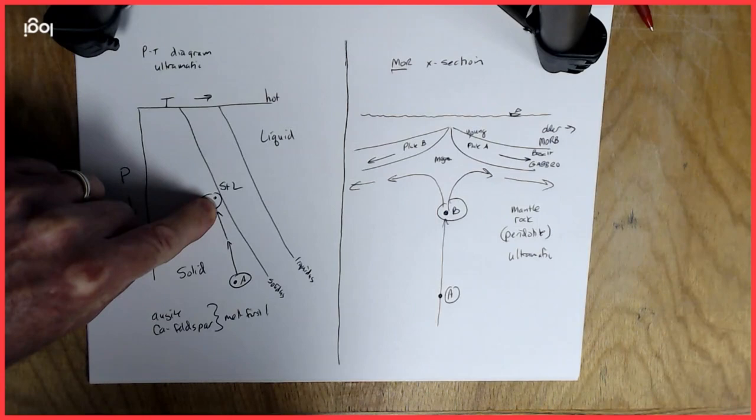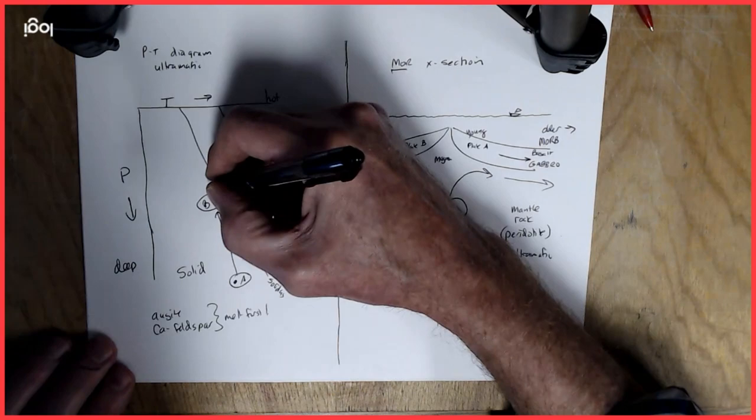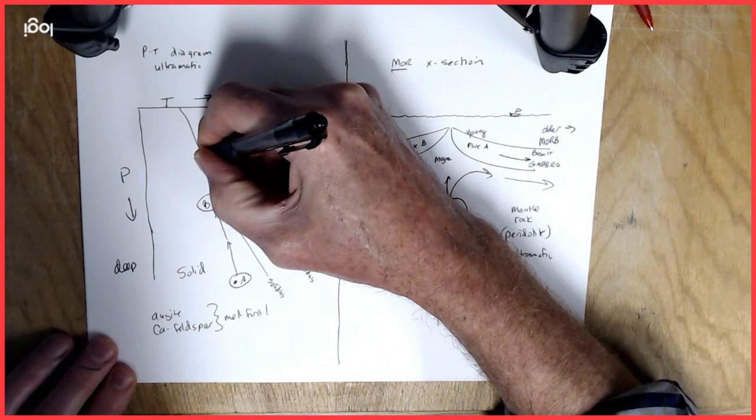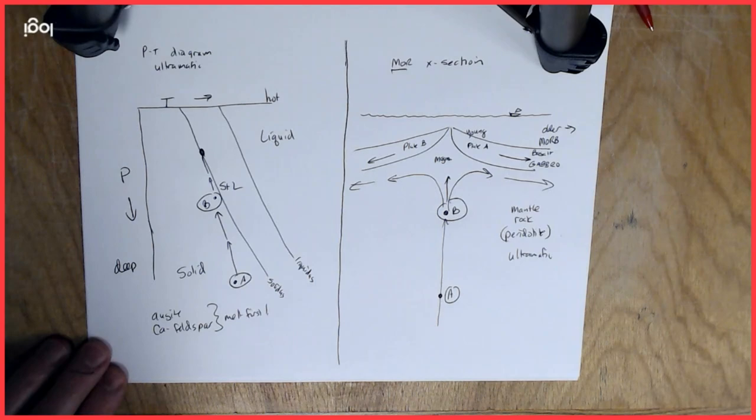So point B, it's still a solid material. We're still well within the solid phase here. We're below the solidus. But if it continues on a path like that, as it continues to rise, it may reach a point that that material crosses the solidus. Let's call that point C.